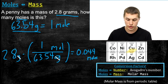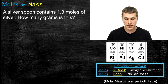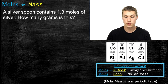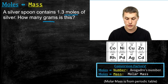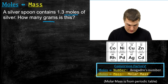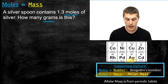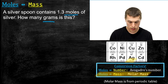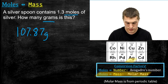Let's do one more practice problem going moles to mass. A silver spoon contains 1.3 moles of silver — how many grams is this? Since we're going between moles and mass, we use molar mass from the periodic table. Silver is Ag, and its molar mass is 107.87 grams per mole. So I write the equality: 107.87 grams equals one mole. That tells me a mole of silver atoms weighs 107.87 grams.